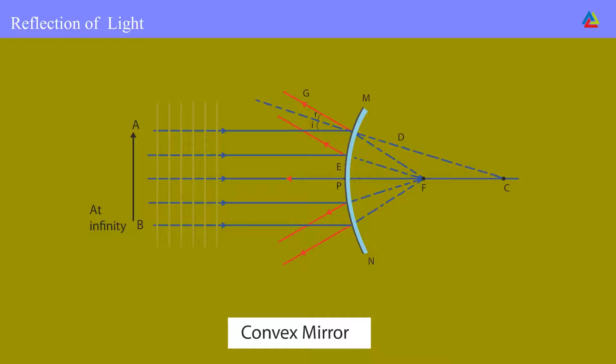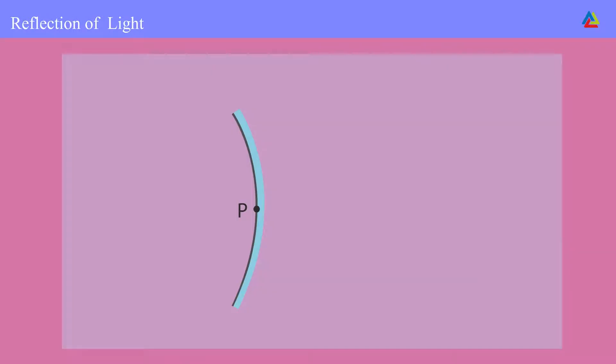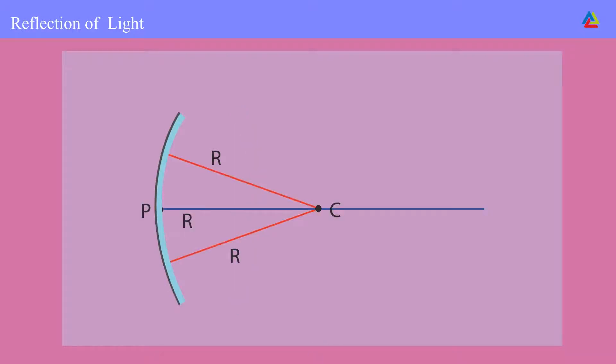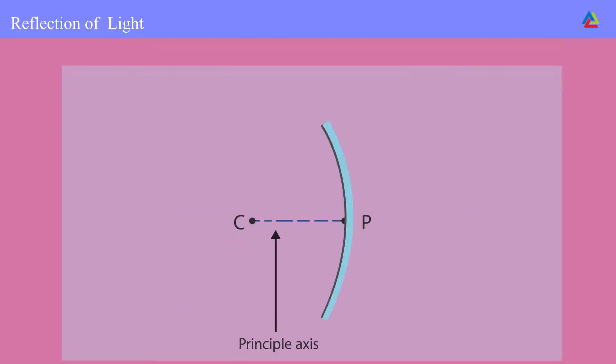Key terms: One, pole or P — the center of the reflecting surface of a spherical mirror is called the pole. Two, center of curvature — the reflecting surface of a spherical mirror forms part of a sphere, and this sphere has a center known as the center of curvature. Three, radius of curvature — the radius of the sphere of which the reflecting surface forms a part is called the radius of curvature. Four, principal axis — the line joining the pole and center of curvature is called the principal axis.